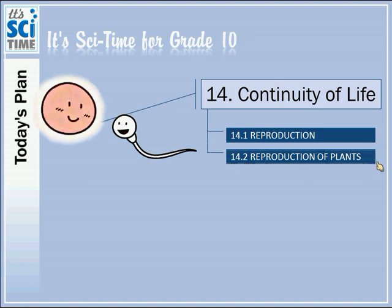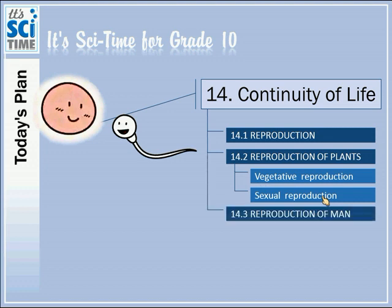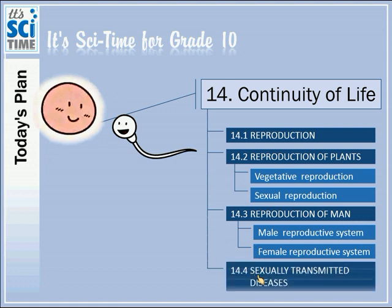First, we have a basic introduction to reproduction. Then, reproduction of plants (14.2), which covers two ways: vegetative reproduction and sexual reproduction, discussed over two lessons. Next, reproduction of man (14.3), divided into the male reproductive system and female reproductive system. The last theme is 14.4, sexually transmitted diseases. Today's plan is to complete this basic introduction.